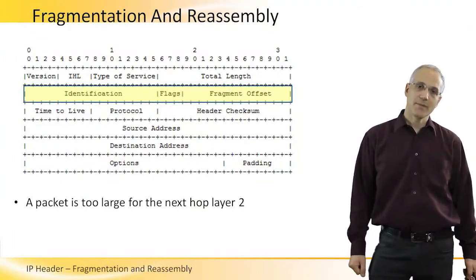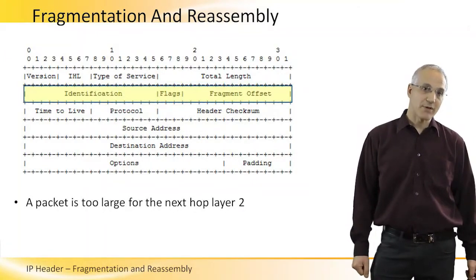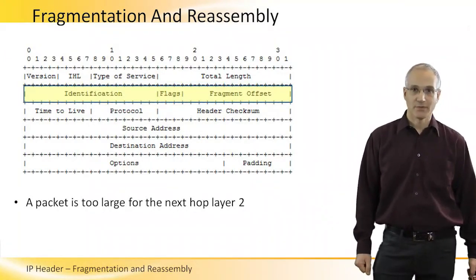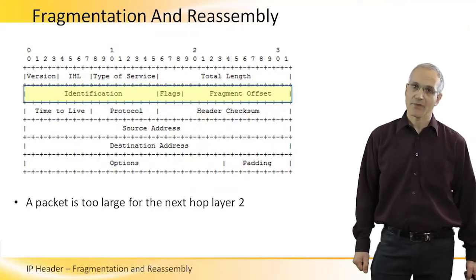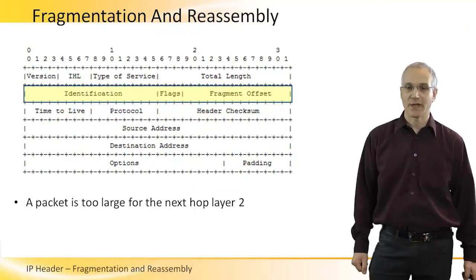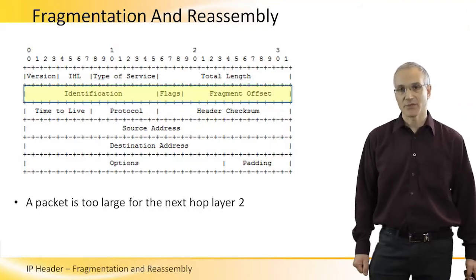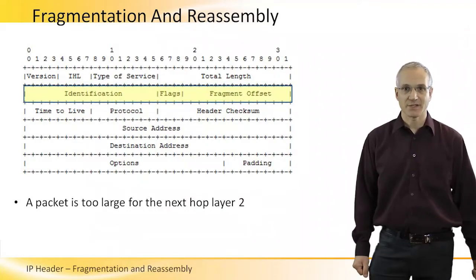As we said, IP can run on any Layer 2 protocol. What happens if an IP packet arrives to your router and the next hop medium it needs to travel cannot accept packets that are as large as this one?